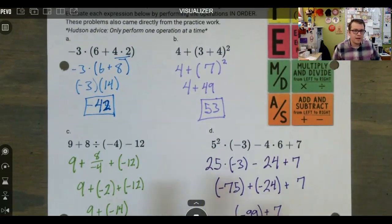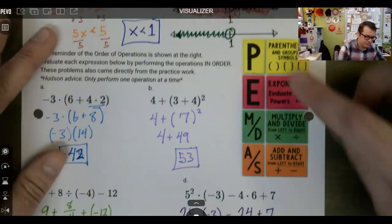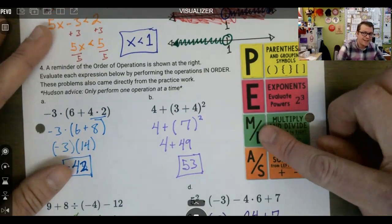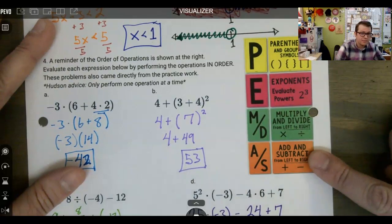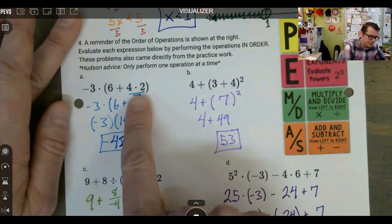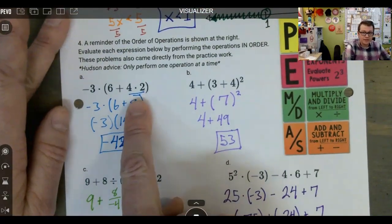And our reminder about PEMDAS, right? Parentheses, exponents, multiply, divide happen at the same time, left to right. Addition, subtraction happen at the same time, left to right.